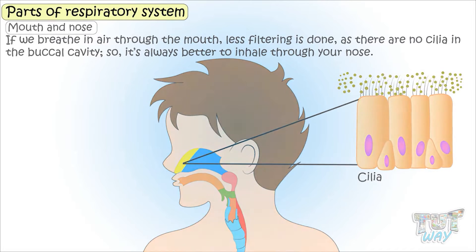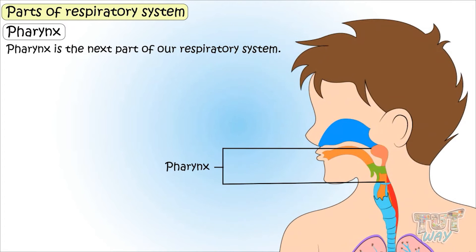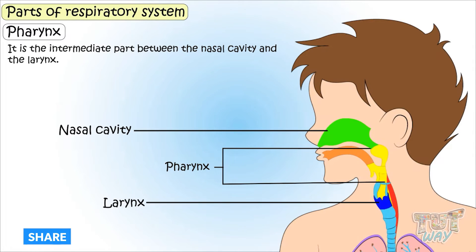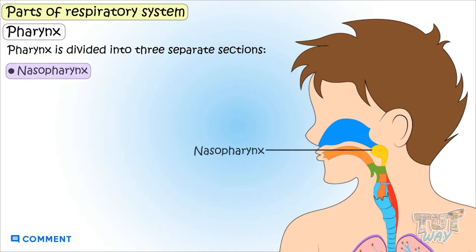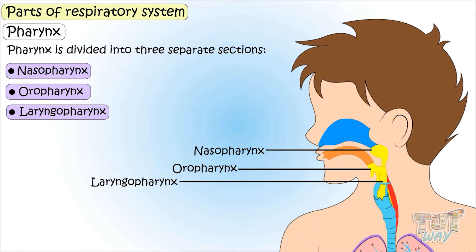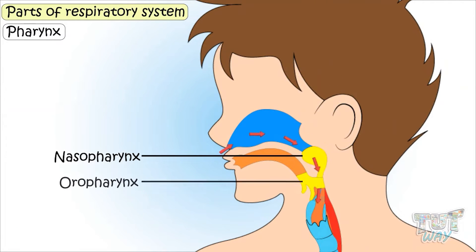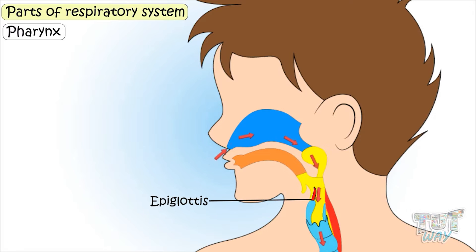The next part is the pharynx, or simply the throat. It is the intermediate part between the nasal cavity and the larynx. The pharynx is divided into three separate sections: nasal pharynx, oral pharynx, and laryngopharynx. Air travels through the nasal pharynx and oral pharynx and reaches the laryngopharynx. Once the air reaches the laryngopharynx, the epiglottis diverts the air to the larynx.